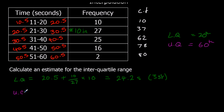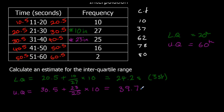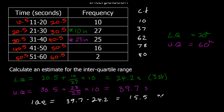For the upper quartile we're looking for the 60th value, which is in the third group. We were at 37 and need to get to 60, so we're going 23 in. The lower class boundary plus 23 over 25, times the class width of 10, gives 39.7. The interquartile range is 39.7 take away the whole answer for the lower quartile, which is 39.7 take away 24.2, giving us 15.5 to 3 significant figures.